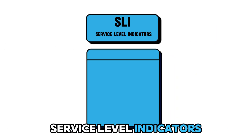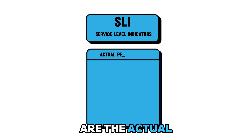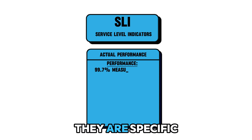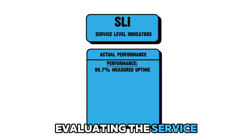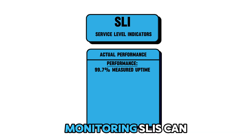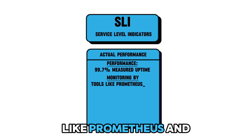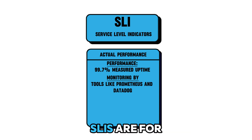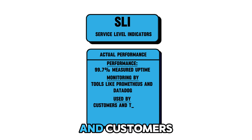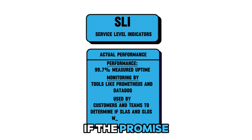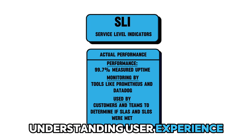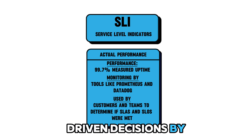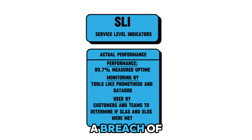Service level indicators, or SLIs, are the actual measured performance metrics. They are specific, quantifiable, and crucial for evaluating the service quality provided. Monitoring SLIs can be done through various tools like Prometheus and Datadog. SLIs are for both internal teams and customers to determine if the promise made in the SLA is being met. SLIs help in identifying issues, understanding user experience, and making data-driven decisions by internal teams before there is a breach of SLA.